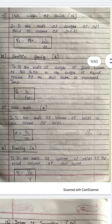Most important term: specific gravity, capital G. Specific gravity G is the ratio of weight of a given volume of soil solid to the weight of an equal volume of distilled water at standard temperature — that is gamma S by gamma W. Next, void ratio, small e. Void ratio is the ratio of volume of voids to the volume of soil solids.